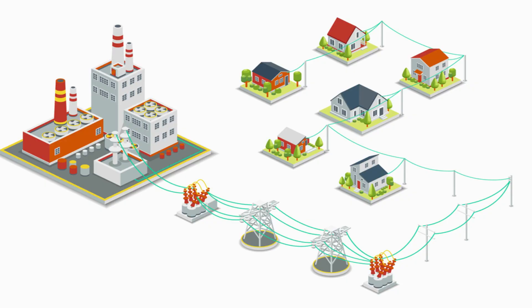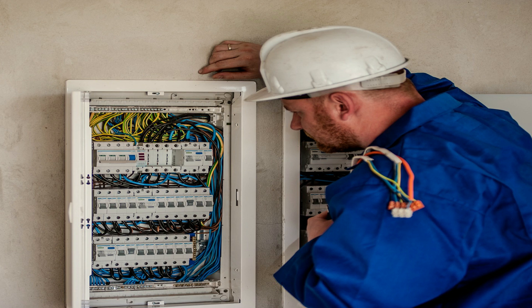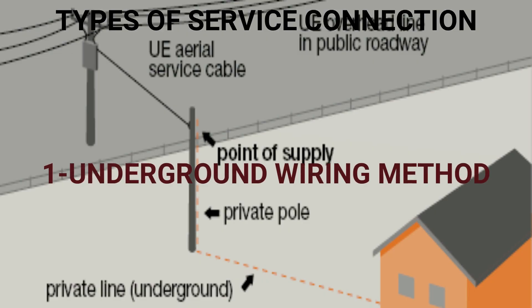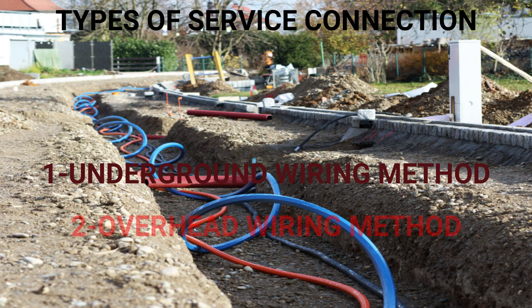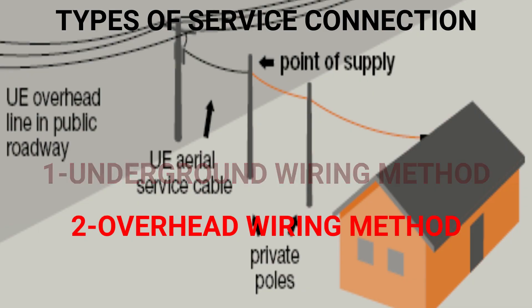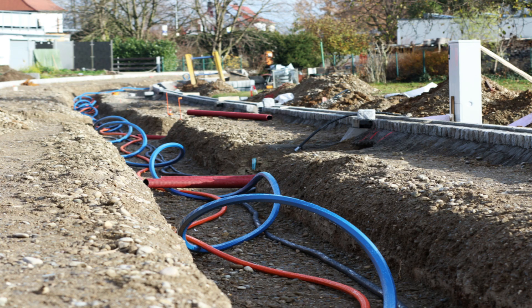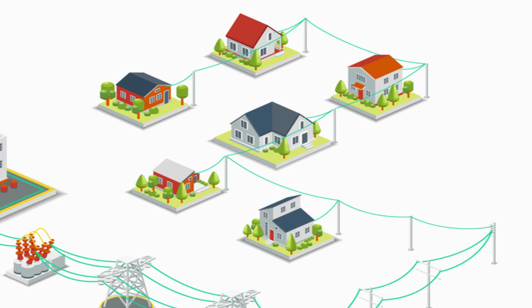The service connection cabling is the wiring system concerned with how electrical power from the utility is brought to the energy meter installed in the project premises. It is of two types: the underground, also called the direct burial method, and the overhead wiring method. The underground is more preferred to the overhead because of its aesthetic appeal, but its cost has always been its setback.